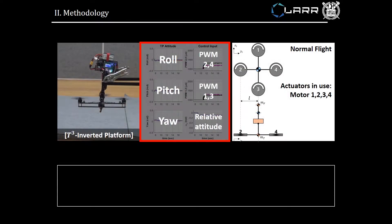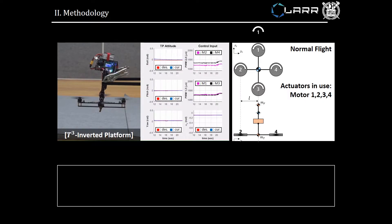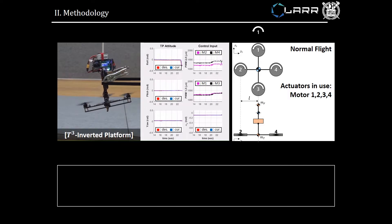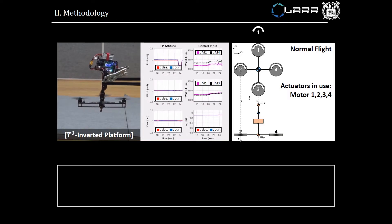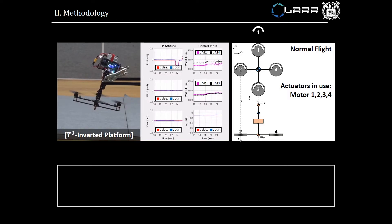The graphs show the flight log, including the roll, pitch, and yaw attitude of the TP, and control commands. In a typical multi-rotor flight, only the set of thrusters are utilized for flight.